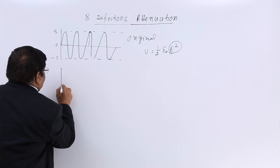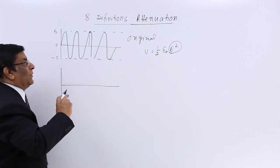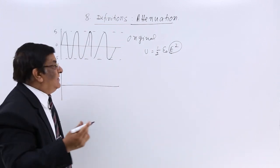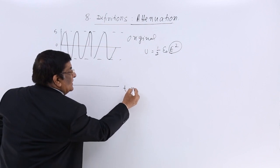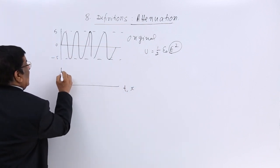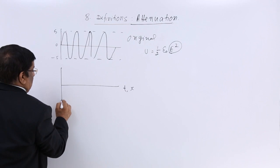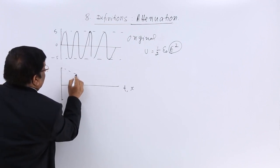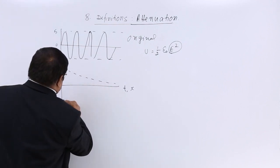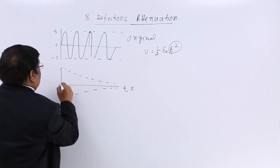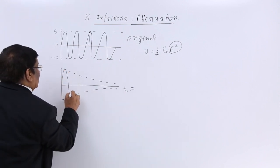So if we see over time or over distance, the amplitude here, the wave becomes slightly less, and the wave becomes like this.